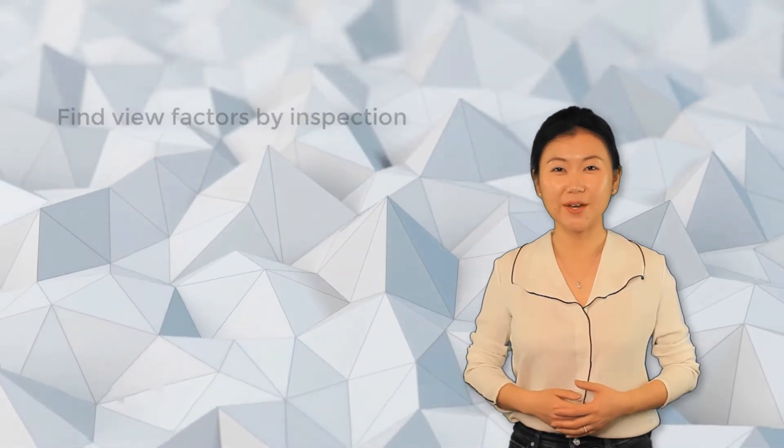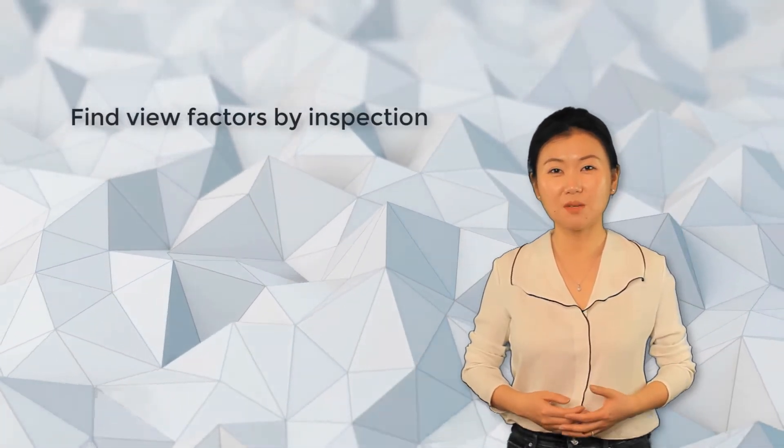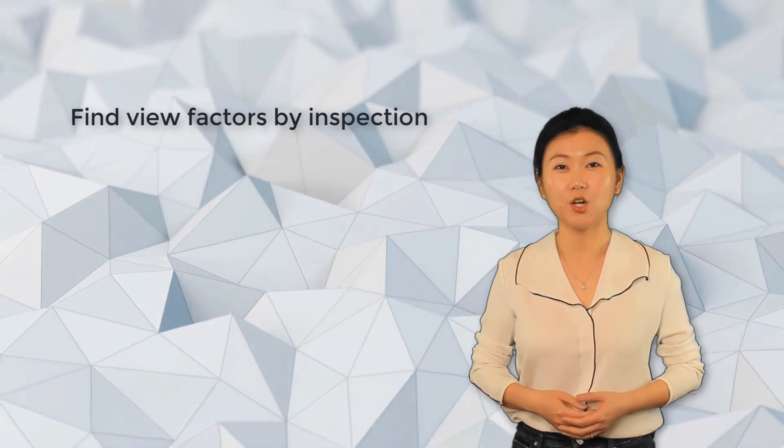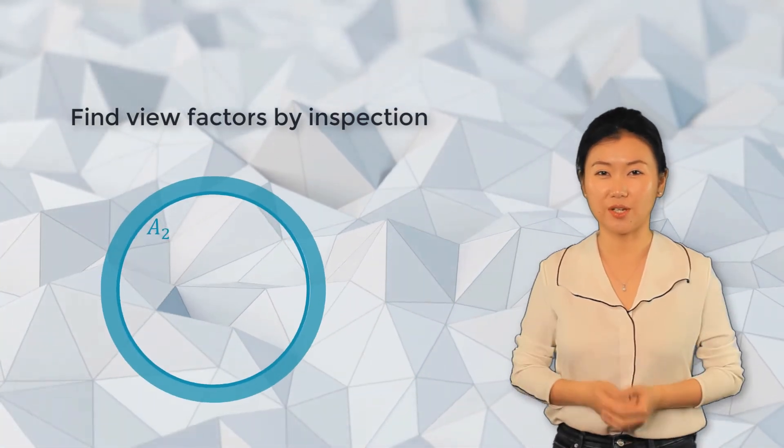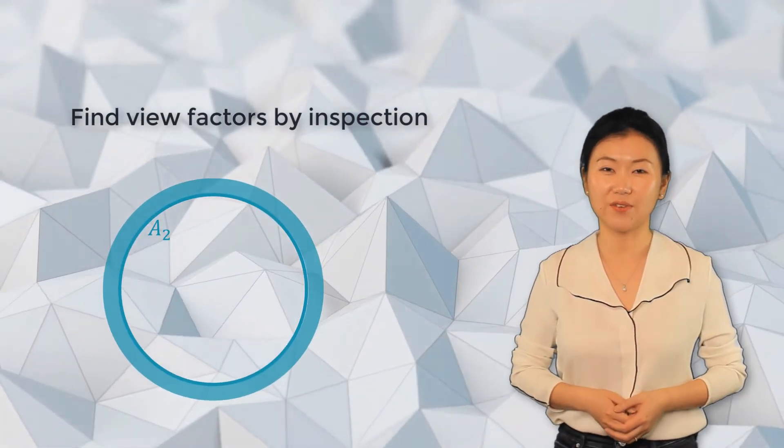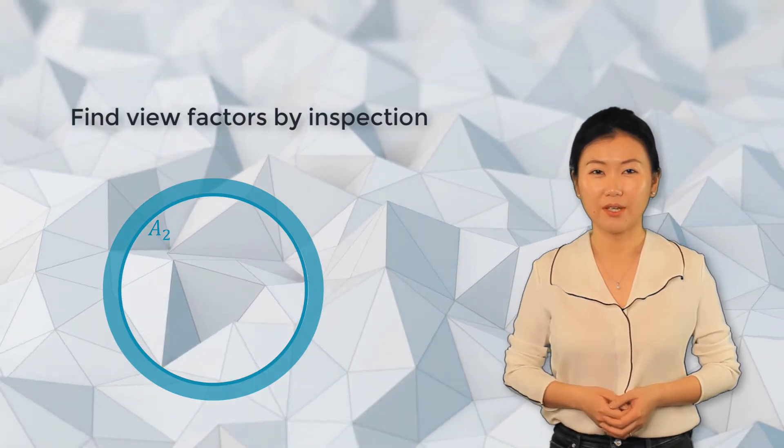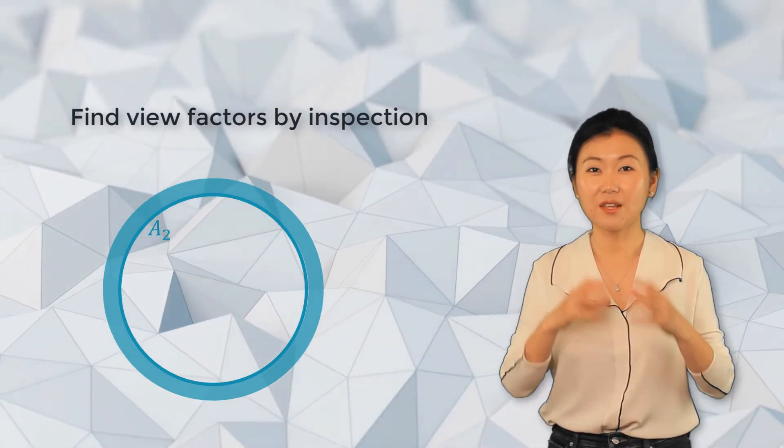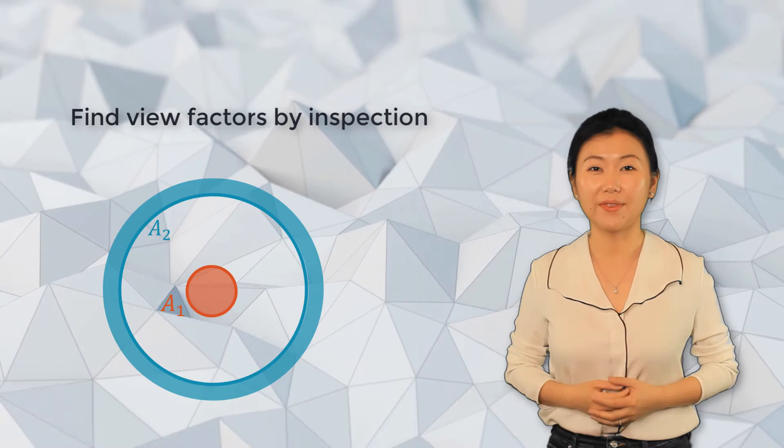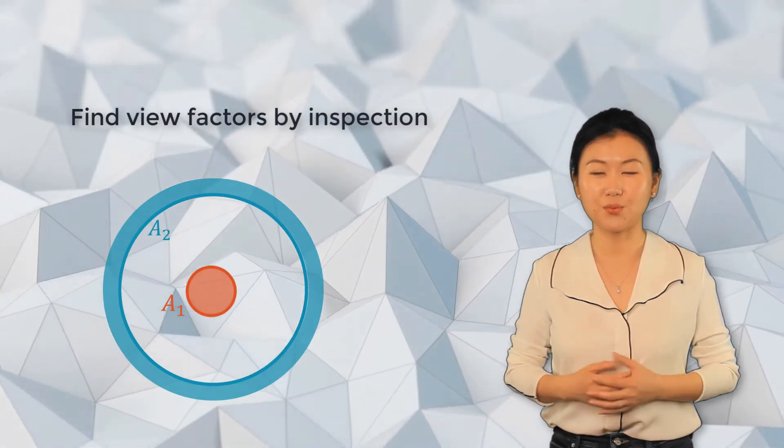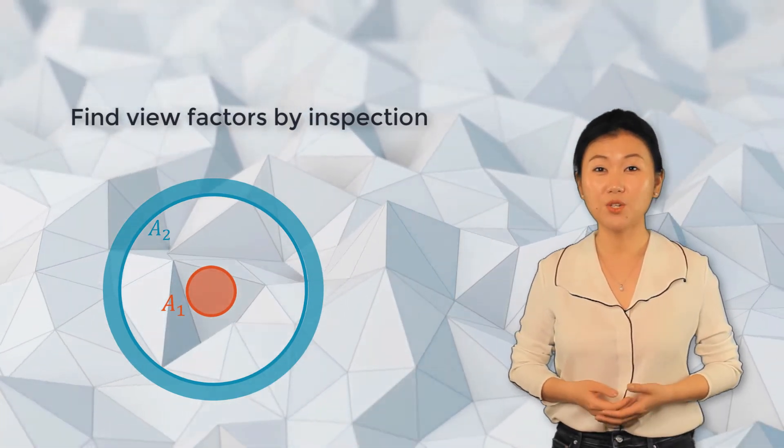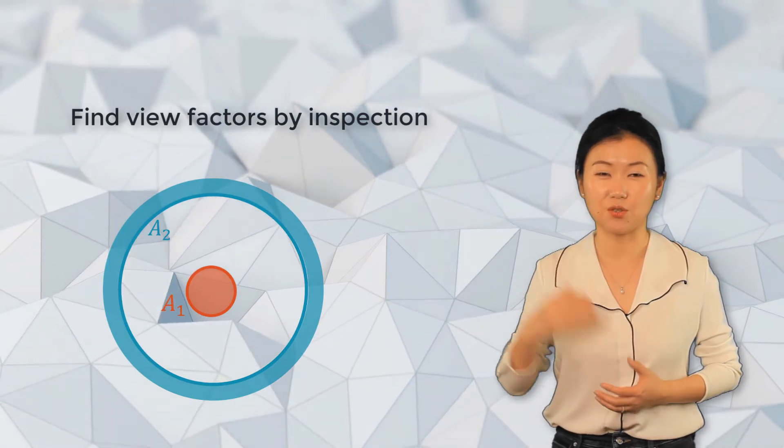Now let's try to find view factors for some simple geometries. Here we have a hollow sphere geometry. We call the inner surface of it surface two. Inside the hollow sphere, there's another smaller sphere. We call the outer surface of it surface one. Now we want to find view factors between surface one and surface two.